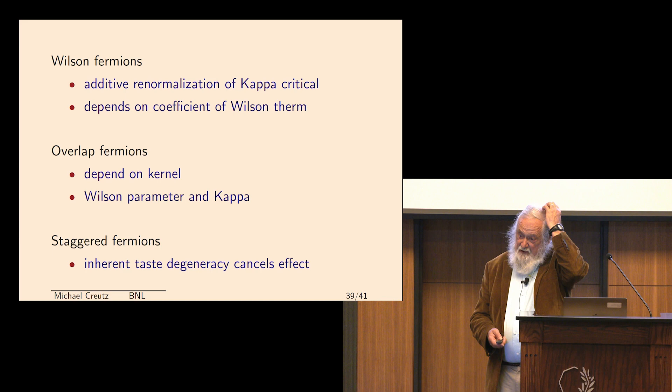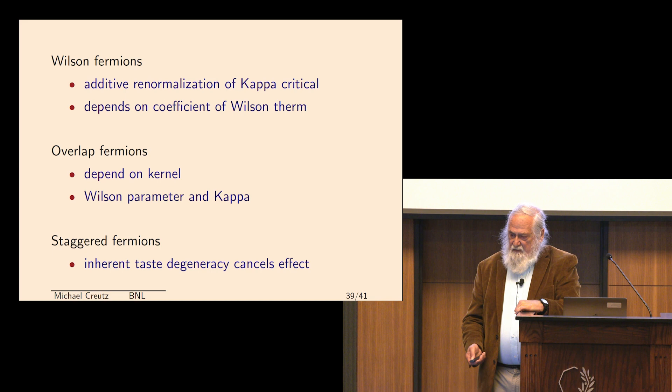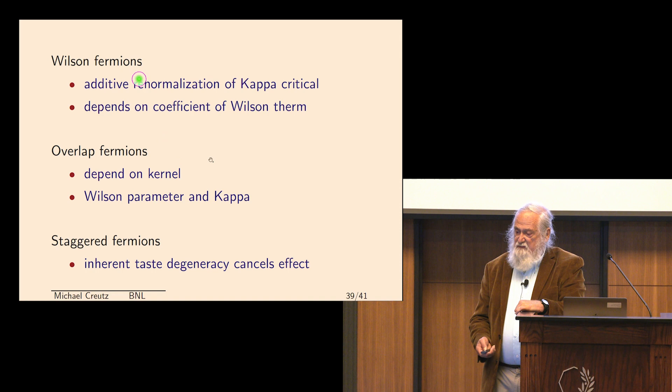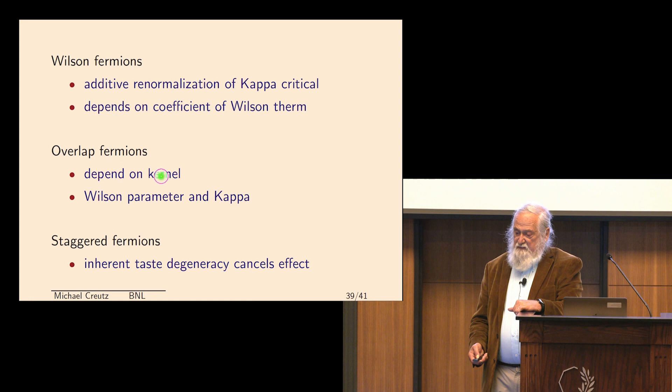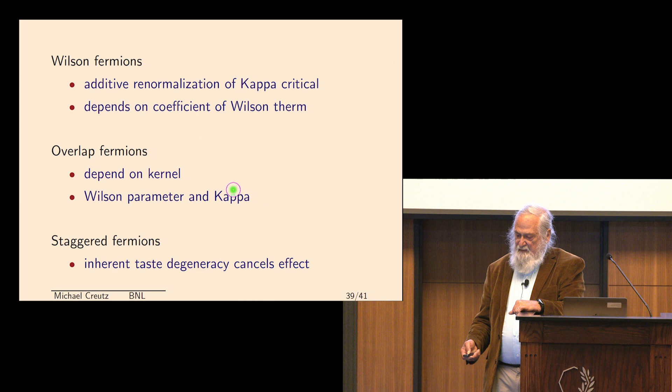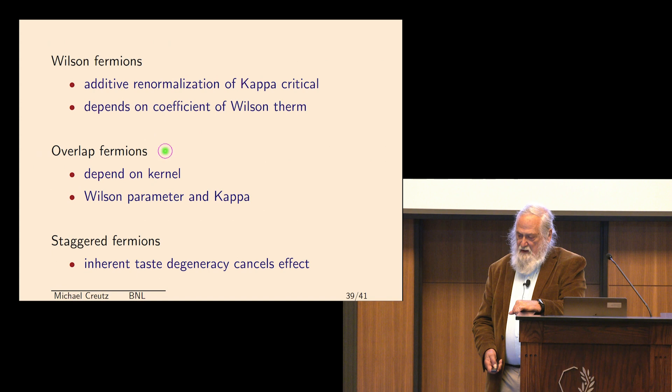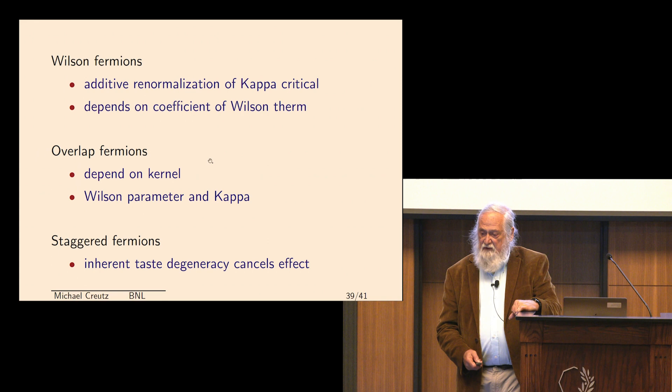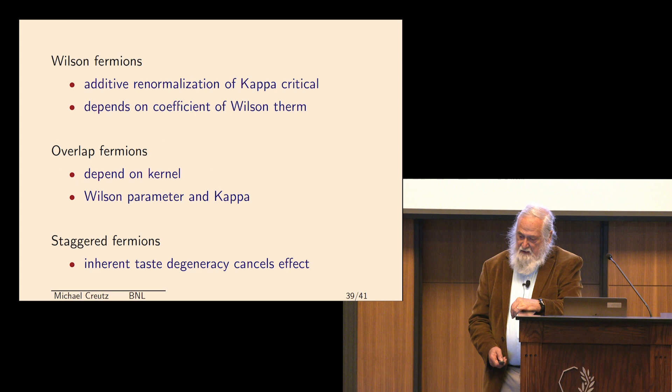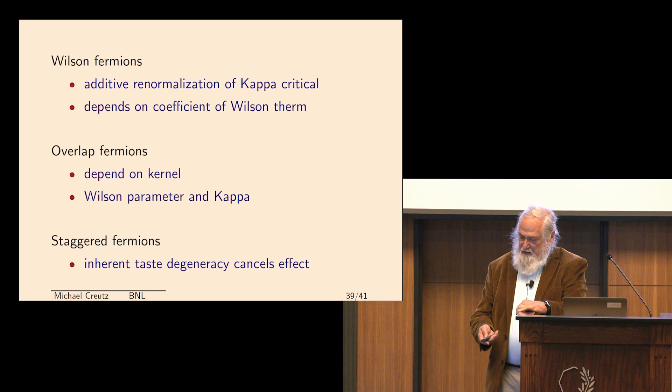How does this happen on the lattice? Well, in the lattice, we have to solve things like the doubler problem and stuff, which I'm not going into here. But Wilson fermions actually have an automatic additive renormalization, which depends on the details of the coefficient of the Wilson term. So there is some additive renormalization in Wilson. That's true also in overlap fermions. They depend on the kernel you use to define them. And the usual kernel is the Wilson fermions again, so it depends on the same parameters. You don't see this with staggered fermions. And the reason is that staggered fermions always have a degeneracy between the various quarks. You cannot break the symmetry between the up and the down-quark mass with staggered fermions. And this symmetry cancels this effect completely.